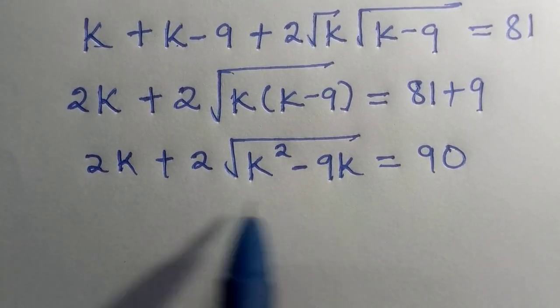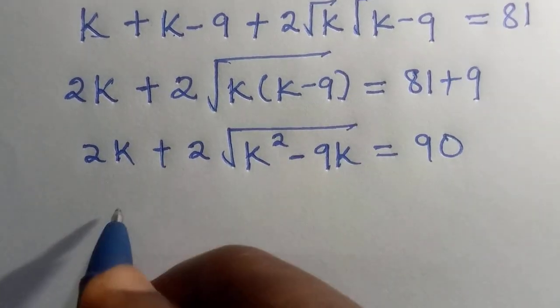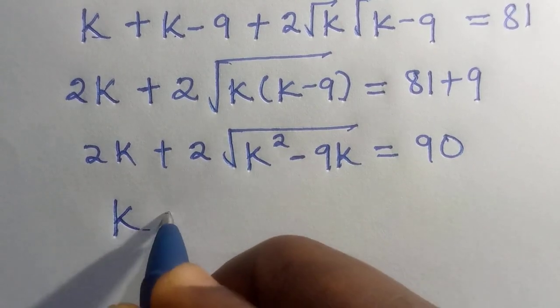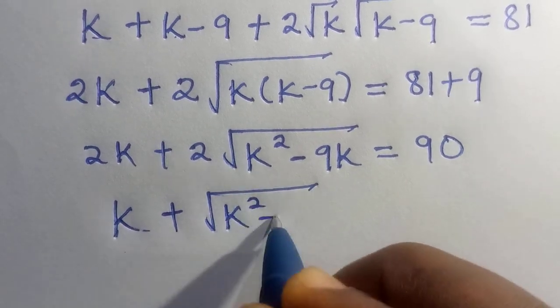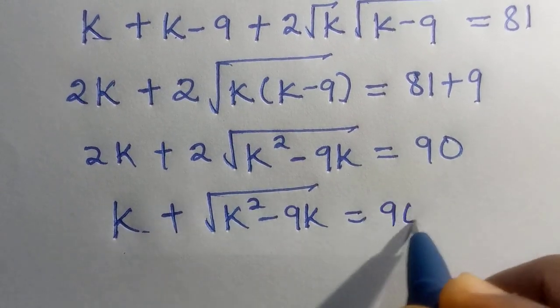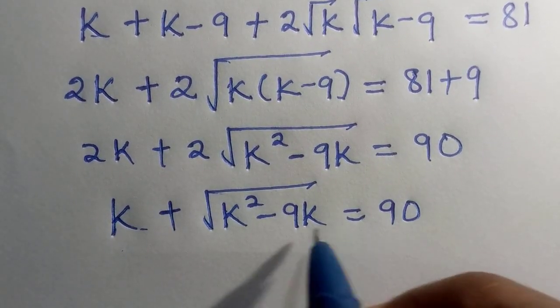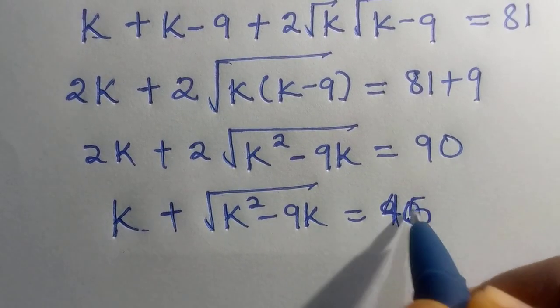So, we have 2 that is common to them. By dividing both sides by 2, here it becomes k plus square root of k square minus 9k equals 45.